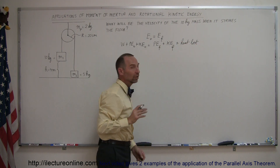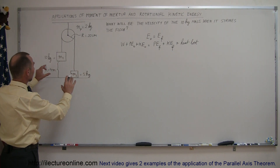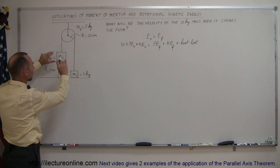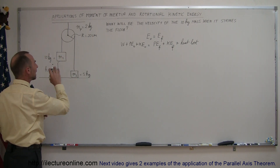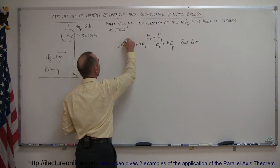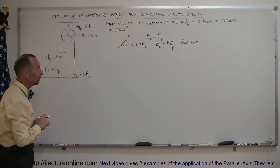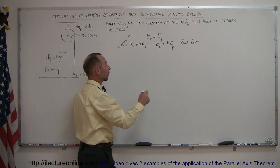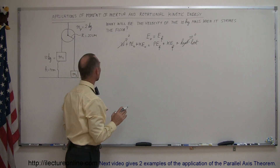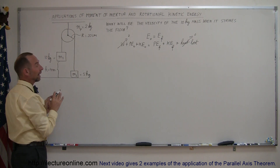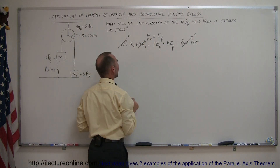Now, which of these are zero? We set up the system, hold it in place, and then let go the moment time equals zero. That means there is no work input to the system, so we set that equal to zero. Also, no mention of friction was made, so we can assume there's no heat lost to friction. And since everything starts from rest, the system will have no kinetic energy at the very beginning, so that will also be zero.